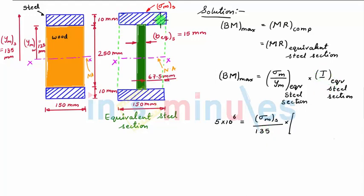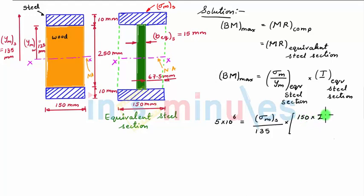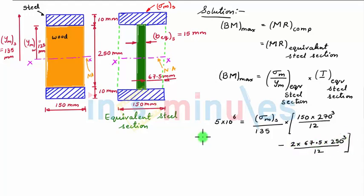The moment of inertia is calculated as: the moment of inertia of the bigger rectangle of width 150 mm and depth 270 mm (= 250 + 10 + 10) minus the moment of inertia of two small rectangles of width 67.5 mm and depth 250 mm. This gives: I = 150 × 270³/12 − 2 × (67.5 × 250³/12). Solving this, we get sigma_max of steel equal to 9.6 N/mm².